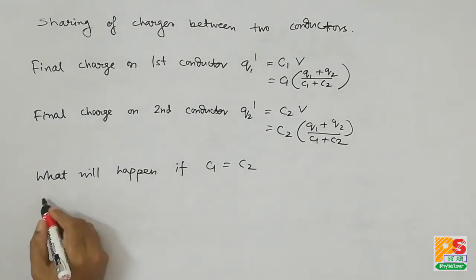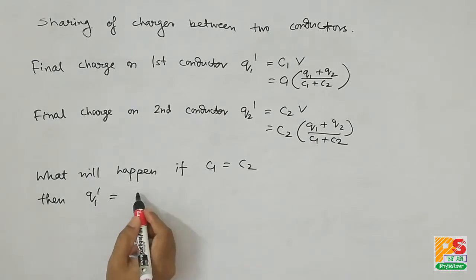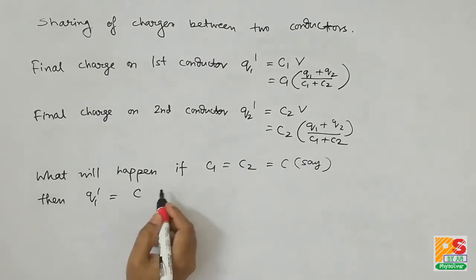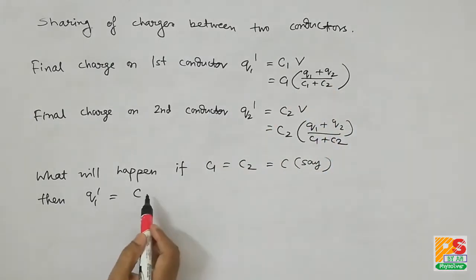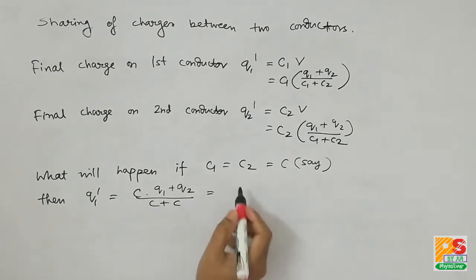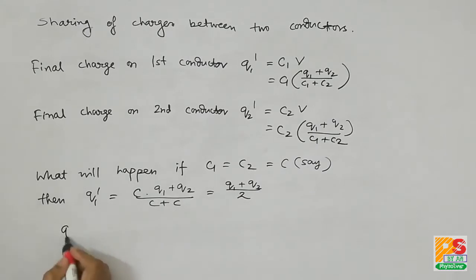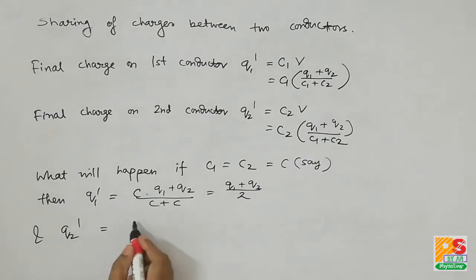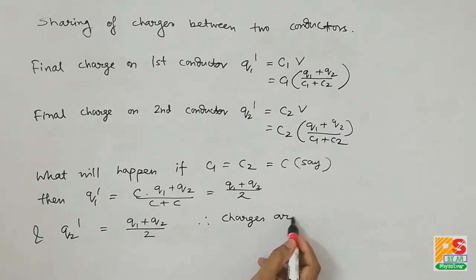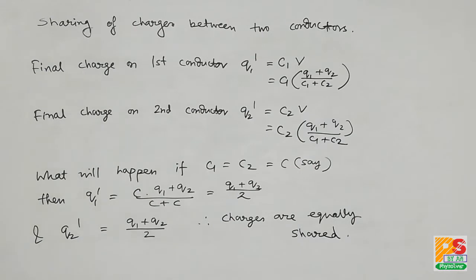Now if the two spheres are of identical size and shape, their capacitances will be equal. Putting C1 equals C2 equals C, we get that Q1 dash equals Q1 plus Q2 divided by 2, and Q2 dash also equals Q1 plus Q2 divided by 2. Thus, when the size and shape of two conductors are identical, the charges are equally shared.